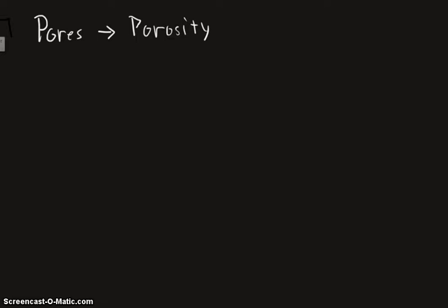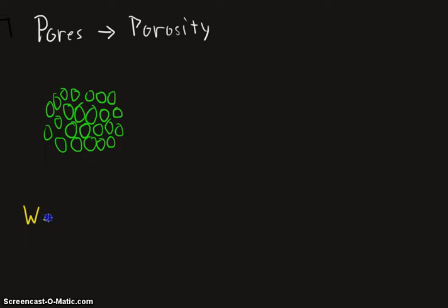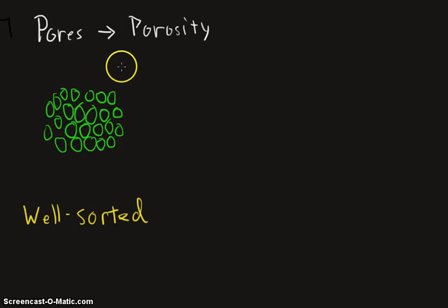To start off this discussion, let's say we have some particles in the ground. If you notice, all the particles are kind of the same size, give or take. You can see the open space forming in between and next to the particles — those are the pores. The fact that the particles are all basically the same size means that arrangement is called a well-sorted arrangement of particles. And in a well-sorted arrangement, there are many pores.